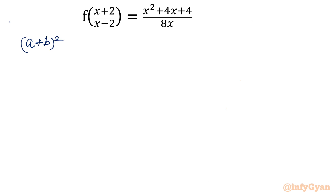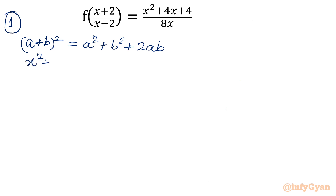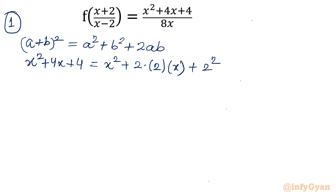This is Method Number 1. This identity we know — it is very common and very useful: a² + b² + 2ab, or you can write a² + 2ab + b². As per our numerator on the RHS, you can see it is x² + 4x + 4. So I will write this as x² + 2·(2)·x + 2², which is (x+2) whole square directly.